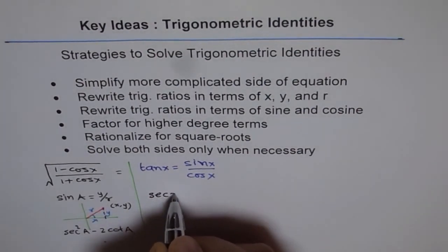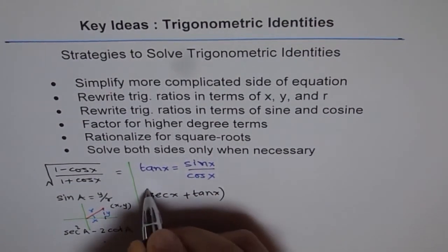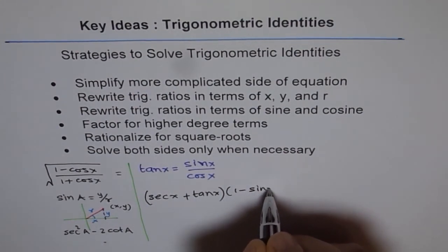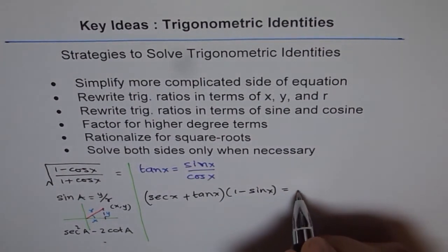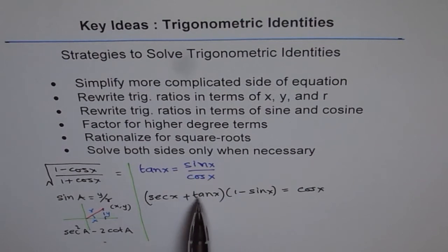Let me give you an example here. For example, if you have secant x plus tan x times 1 minus sin x equals to something. In this case, it is equal to cos x. To prove this identity, the best thing is, write secant and tan in terms of sin and cosine, and then try to simplify, you will get the result. So that is a very important step.